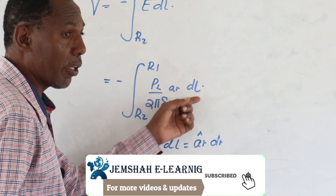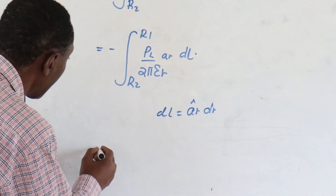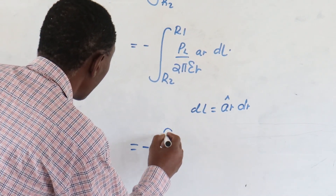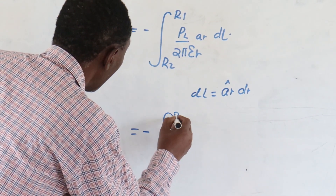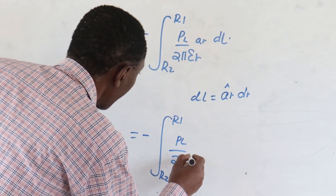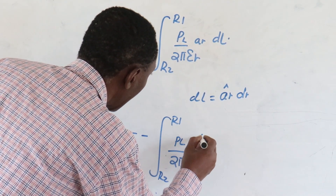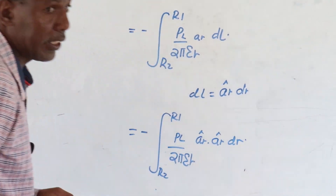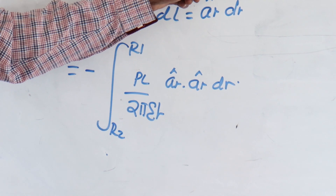DL will be a_R dr. So if we are going to replace this into this equation, then this is minus, from R2 to R1, PL over 2πε R, a_R · a_R dr. We have already replaced the DL.